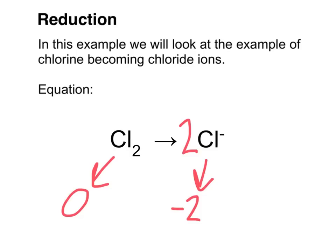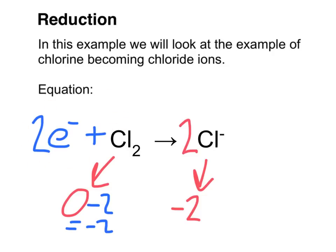The only way to do that is to add negative electrons, and I need to add them to the left-hand side. Each electron has a charge of −1 and I need 2, so: 0 − 2 = −2. Both sides now equal −2. This is an example of reduction because the electrons are on the left, meaning they are being gained.